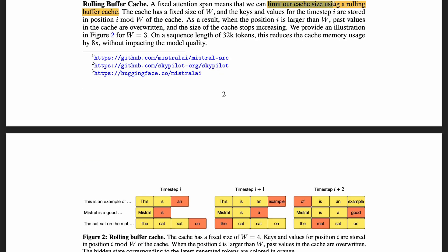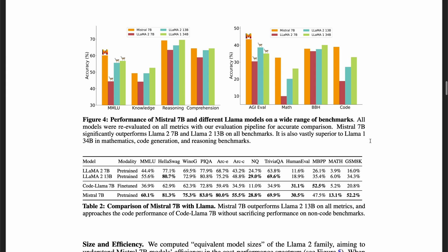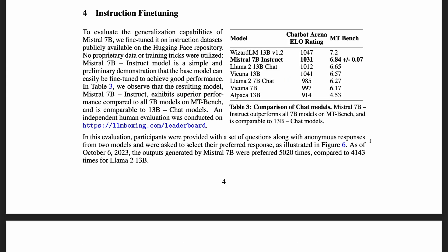They also limit the cache size using a rolling buffer cache. Here's an example where the cache size is 4. At time step i, the current word 'on' is stored in the cache. The next word 'the' replaces the previous cache at that position, and then 'mat' replaces the next cache. Results showed really good performance on Mistral 7B. They also fine-tuned this model and created a Mistral 7B Instruct model, which also outperforms other models, even larger ones.